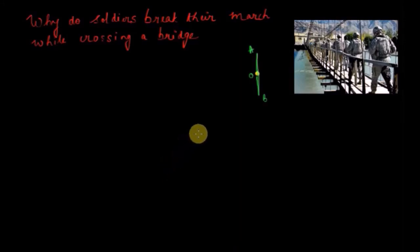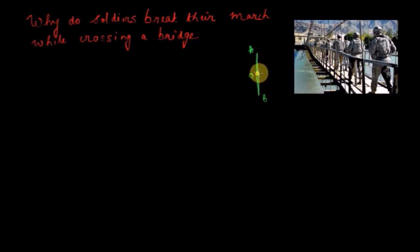Now let's try to analyze this in detail. The bridge is made up of small molecules. When soldiers march on the bridge, the molecules of the bridge start to oscillate. If you represent any one molecule of the bridge by a yellow dot, when soldiers march on the bridge, this molecule will oscillate between points A and B.